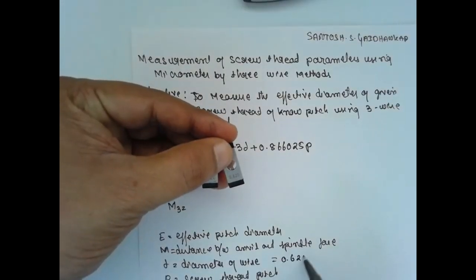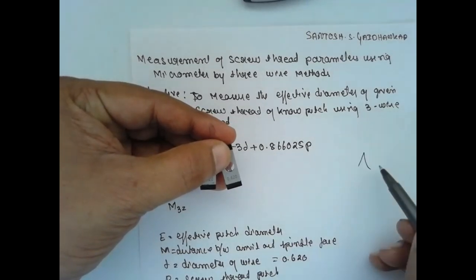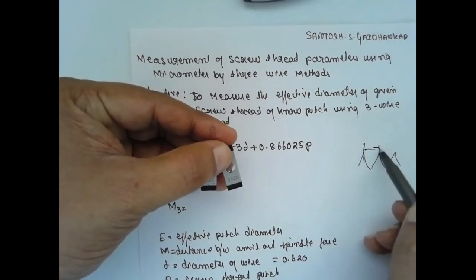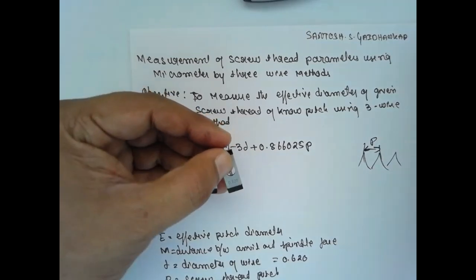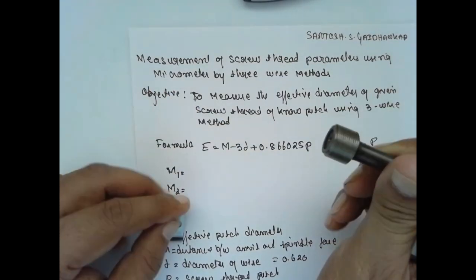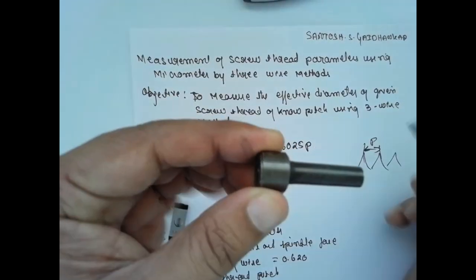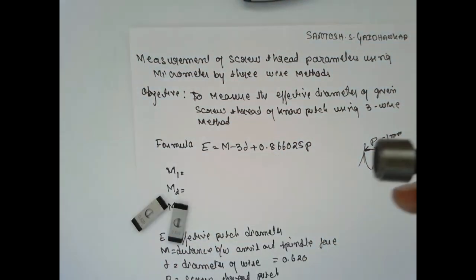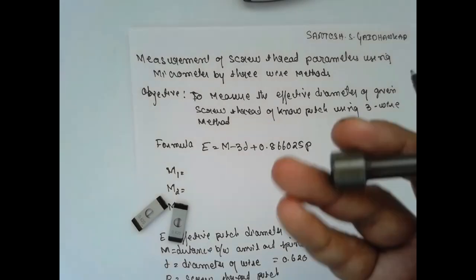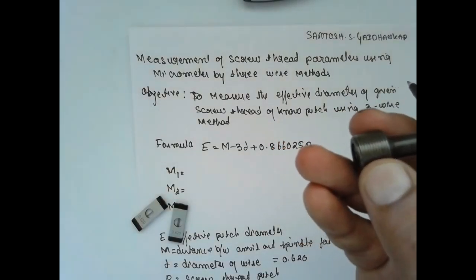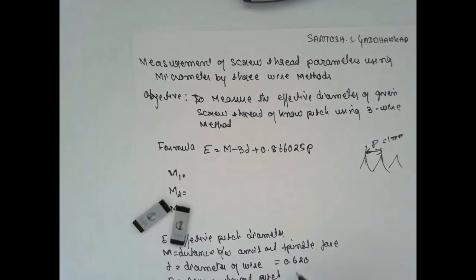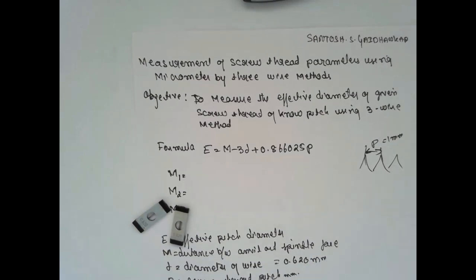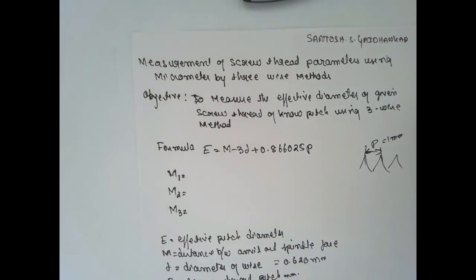This distance between these two peaks we call the pitch P. This is the screw thread parameter. The pitch measured is 1 mm by using the pitch gauge. The diameter is already given, 0.62 mm. Pitch is 1 mm.